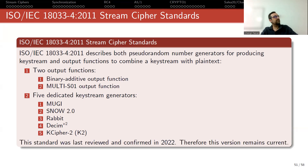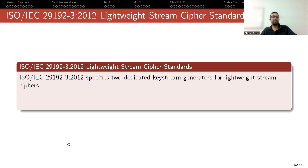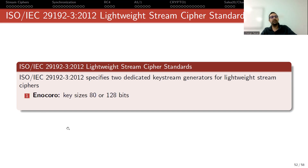This standard was last reviewed and confirmed in 2022, so all of it remains current. But this is for generic stream ciphers. For lightweight stream ciphers, ISO also has another standard established in 2012, which specifies two dedicated keystream generators for lightweight stream ciphers.